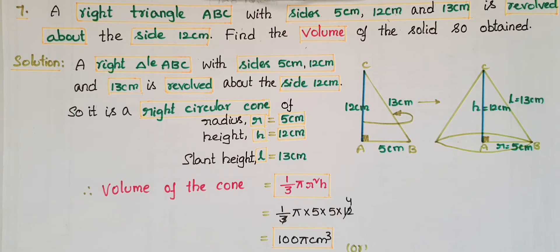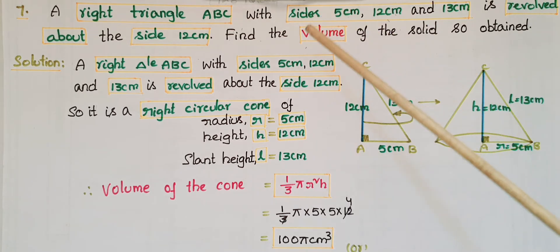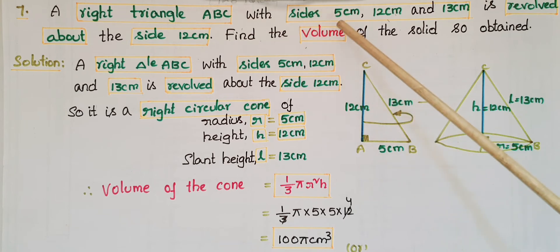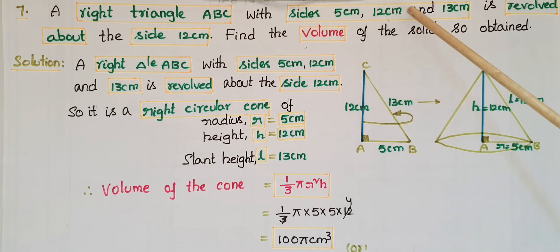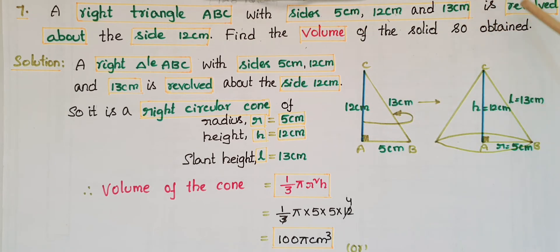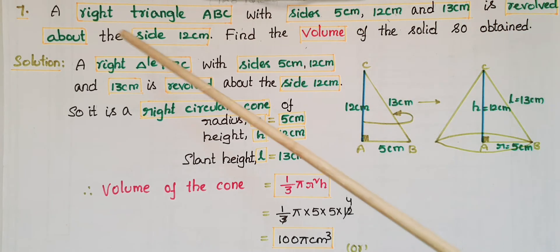Hello everyone, today I am going to tell the solution of the seventh problem from Exercise 13.7, Surface Areas and Volumes, from NCERT Class 9. A right triangle ABC with sides 5 centimeters, 12 centimeters, and 13 centimeters is revolved about the side 12 centimeters.